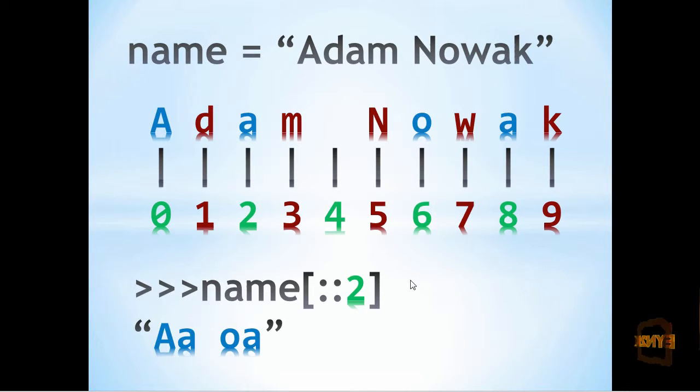We can also increment through a string in a step of two. So in this example, we start off with A, incrementing in two will give us A again, then incrementing two will give us the space, then O, then A.